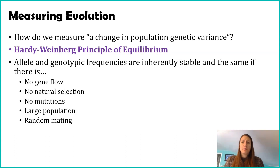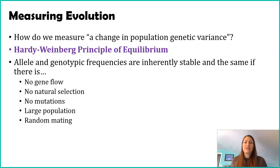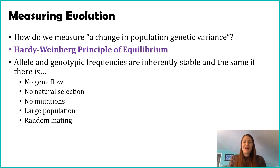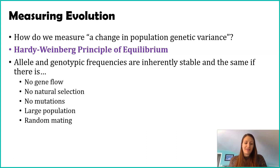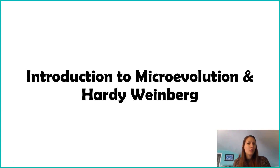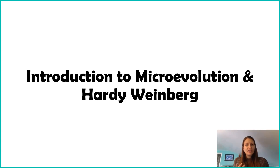You can think of the principle of equilibrium as a null hypothesis — the idea that things will stay the same and won't change. It says your alleles should stay stable as long as those five conditions aren't violated. If there's a lot of mutations or non-random mating, allele frequencies will probably change. So the principle of equilibrium states populations should stay the same, with the exception of those five things. The next videos will explore the Hardy-Weinberg equations used to determine if a population is actually evolving.